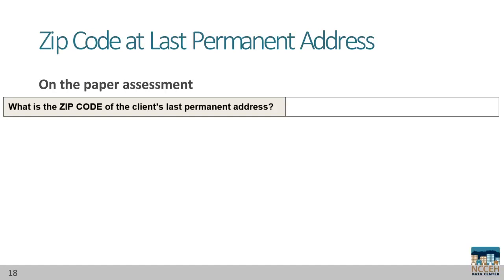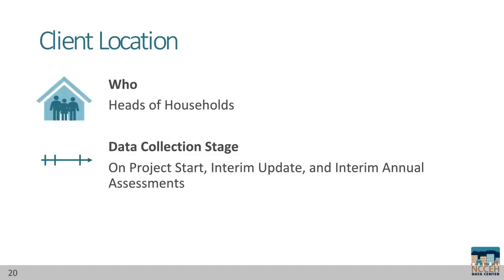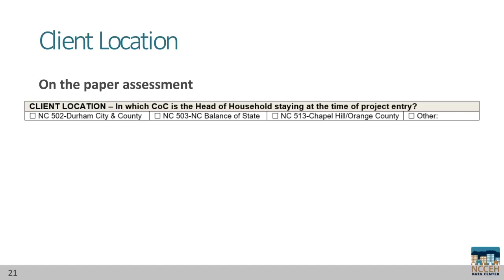Here is zip code on the paper assessment. Client location identifies the continuum of care, or COC, that the head of household is staying in. This element must be accurate as of the day of the assessment and only needs to be completed for heads of households. Client location is collected on project start, interim update, and interim annual assessments to stay up to date. On the paper assessment, we list the three COCs the data center serves. If the head of household is staying outside of these three COCs, write the name next to the other response. All 12 COCs are available in HMIS. This concludes Part 5 of the Introduction to HMIS Data Standards Trainings.